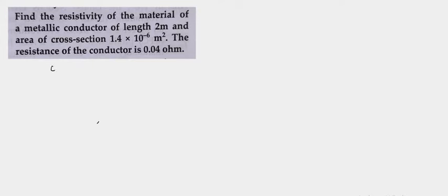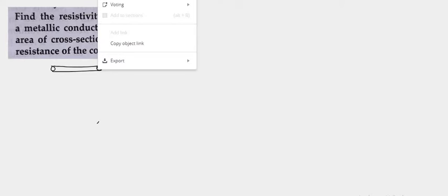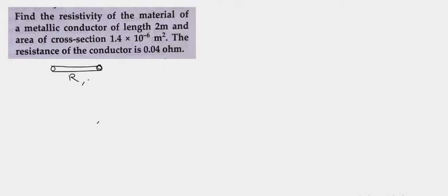So here we have to find out the resistivity of the material of a given metallic conductor. We have been given a metallic conductor whose resistance, length, and area of cross section are given. We have to find out what is its resistivity rho.